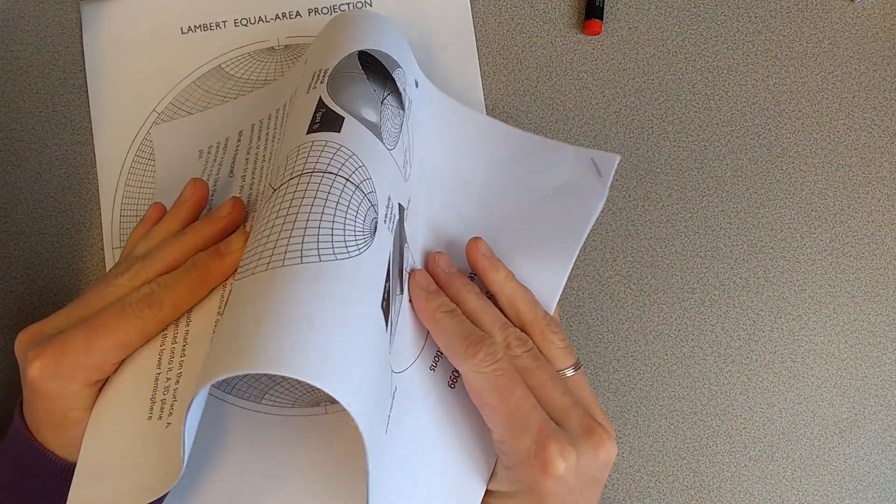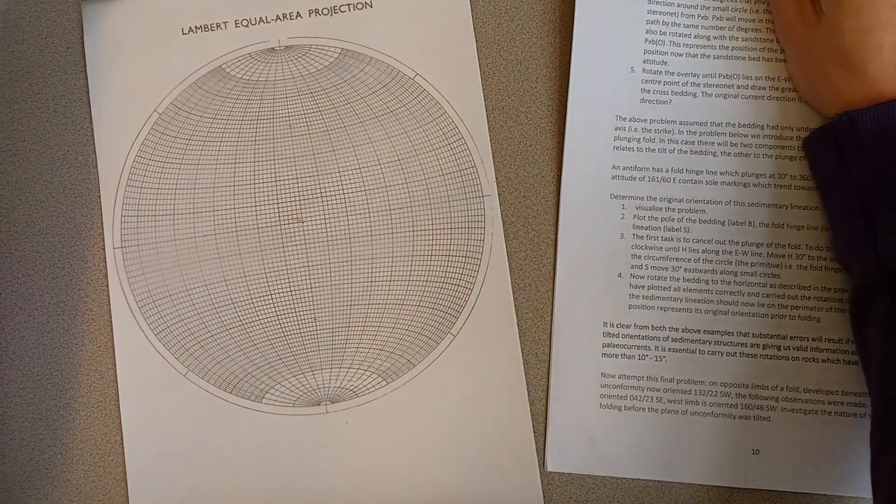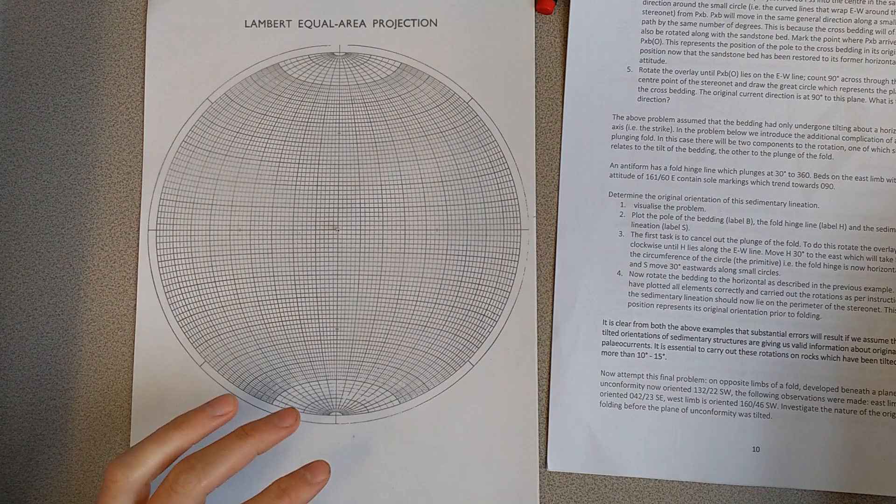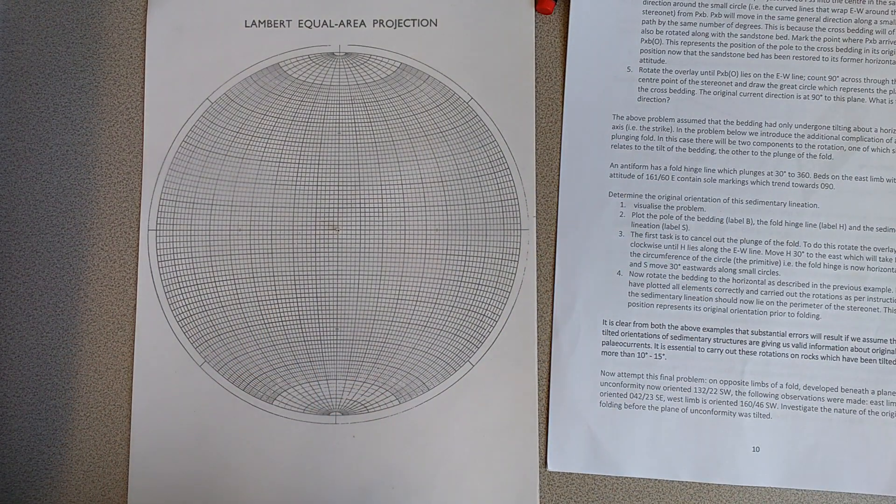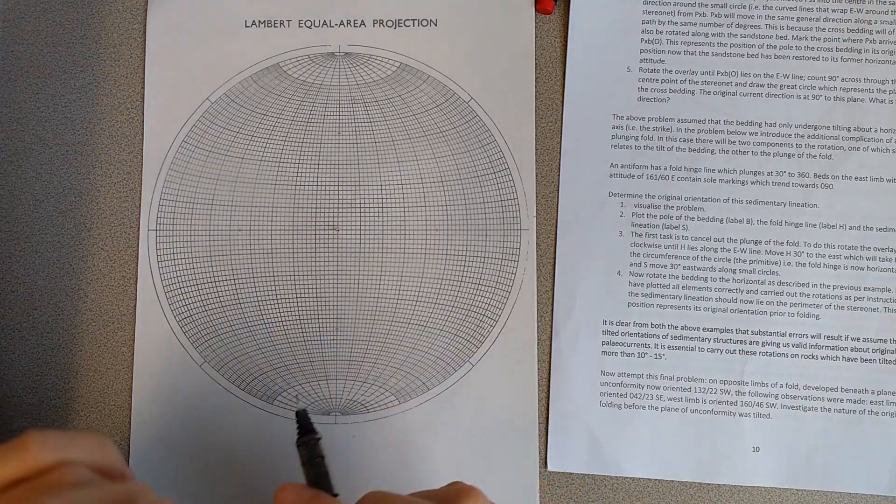So we're looking at a folded sequence which is also inclined. So you're told that there is an antiform which has a hinge line which plunges at 30 degrees towards 360.